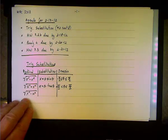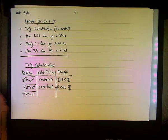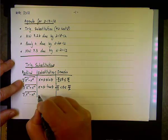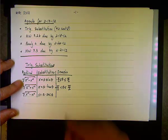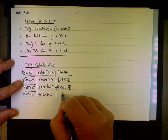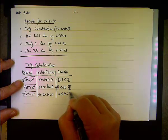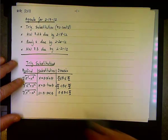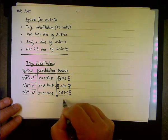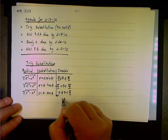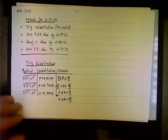For x squared minus a squared, if you think about a being 1, the absolute value of x has to be greater than 1, so the suitable function is the secant. We set x equal to a times secant theta. For positive values we pick the first quadrant, 0 to pi over 2 — 0 is included since secant of 0 is 1, but pi over 2 is not. For negative values we use the third quadrant, letting theta go from pi to 3 pi over 2, with 3 pi over 2 not included.